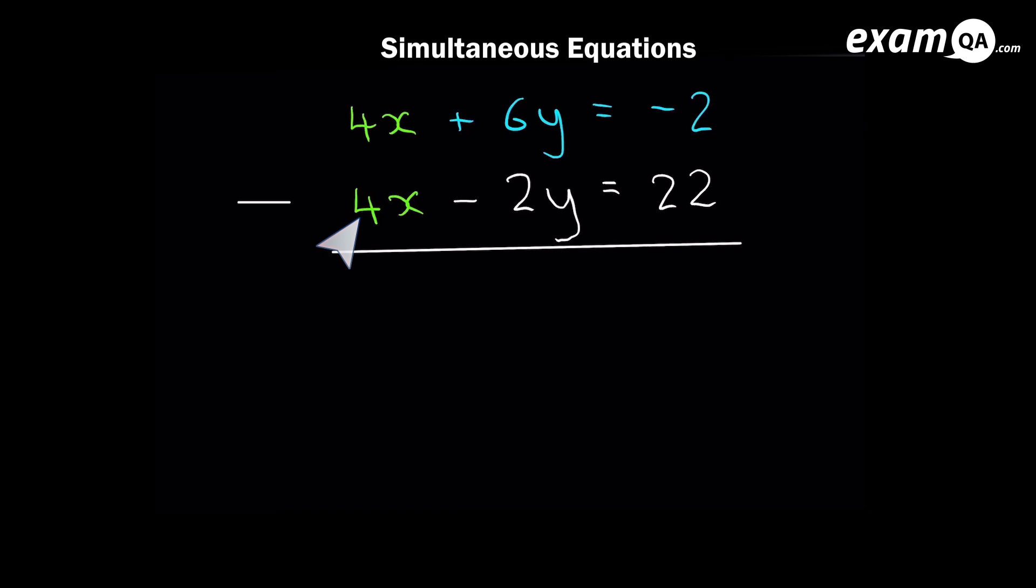So 4x minus 4x is nothing. Now you've got 6y subtract minus 2y. So you have a minus minus situation. You've got 6y minus minus 2y. So that would become 6y plus 2y. Remember when you have a negative with another negative next to it, it just becomes a plus. So 6y plus 2y would become 8y. Then we have minus 2, minus 22, which is minus 24. And you probably know the next step. Just divide both sides by 8, and you have y equals minus 3.